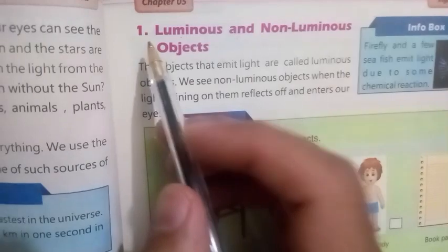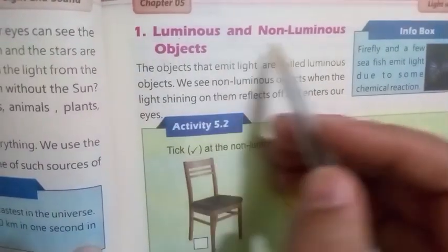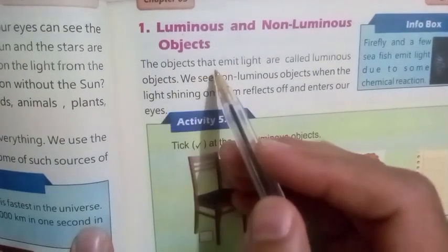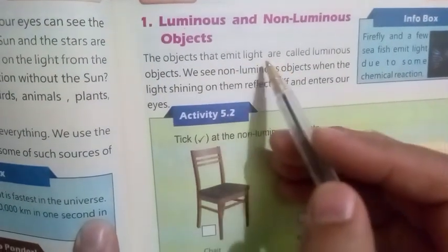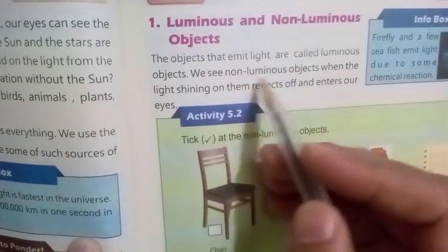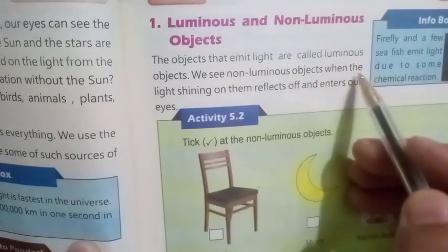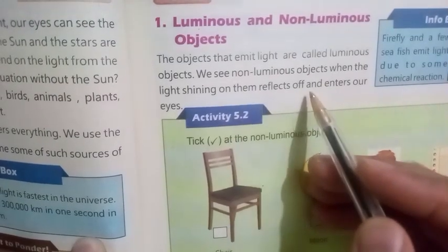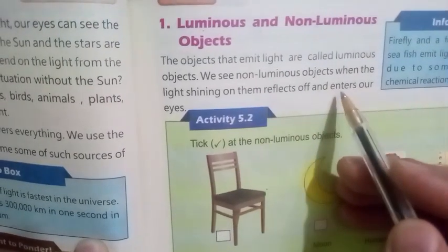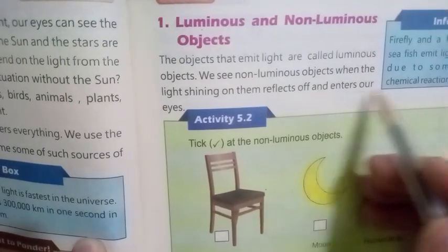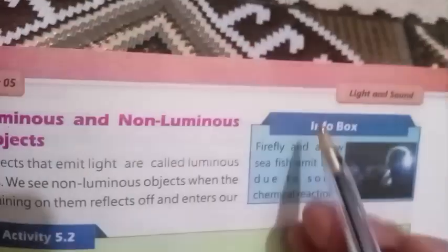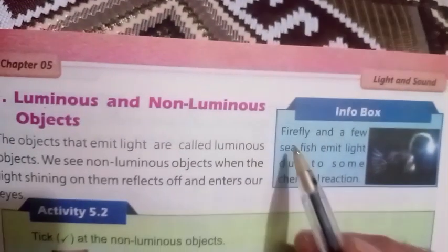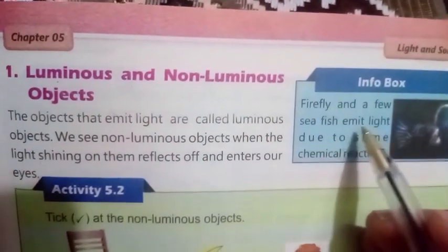Number one: Luminous and non-luminous objects. The objects that emit light are called luminous objects. We see non-luminous objects when the light shining on them reflects off and enters our eyes. Info box: Firefly and a few sea fish emit light due to some chemical reaction.